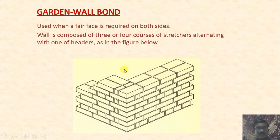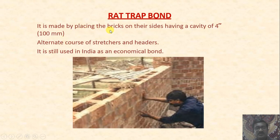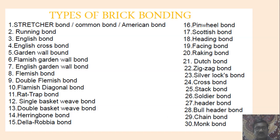Garden wall bond is used when a fair face is required on both sides. The wall is composed of three or four courses of stretchers alternating with one header course. Rat trap bond is made by placing bricks on their sides with a cavity. This cavity helps maintain temperature inside and is still used in India. Alternate courses of stretchers and headers are found in these walls.